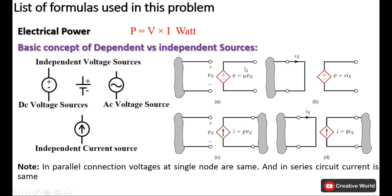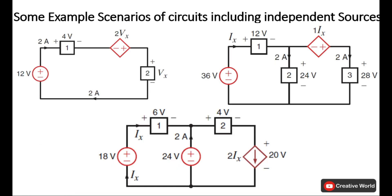All of these dependent sources have two terms: the quantity by which it is being controlled, and the multiplying factor — sometimes referred to as gain. For example, here is a voltage controlled voltage dependent source with a multiplying factor of two, and its output voltage is being controlled by this voltage.